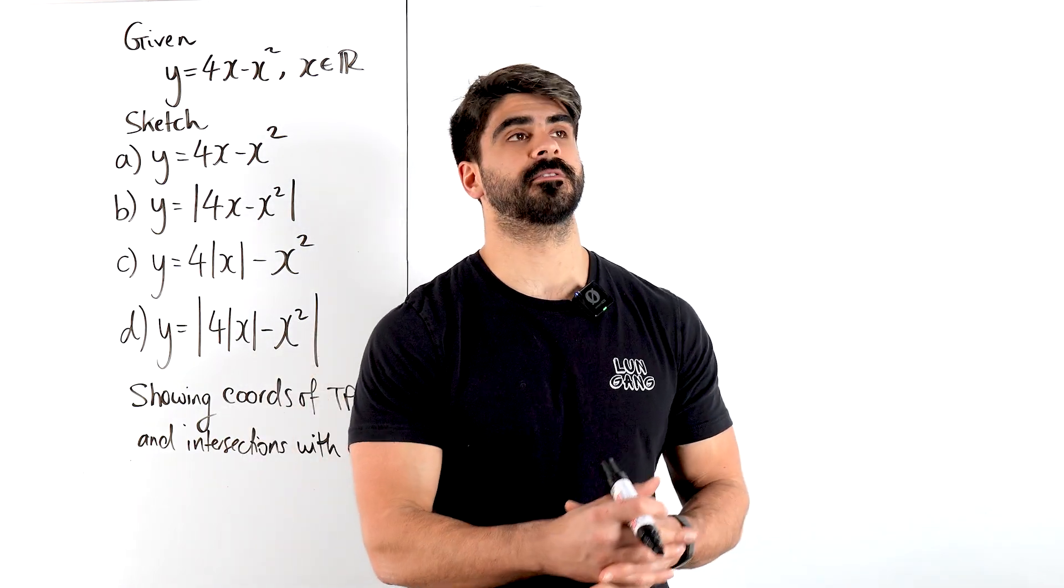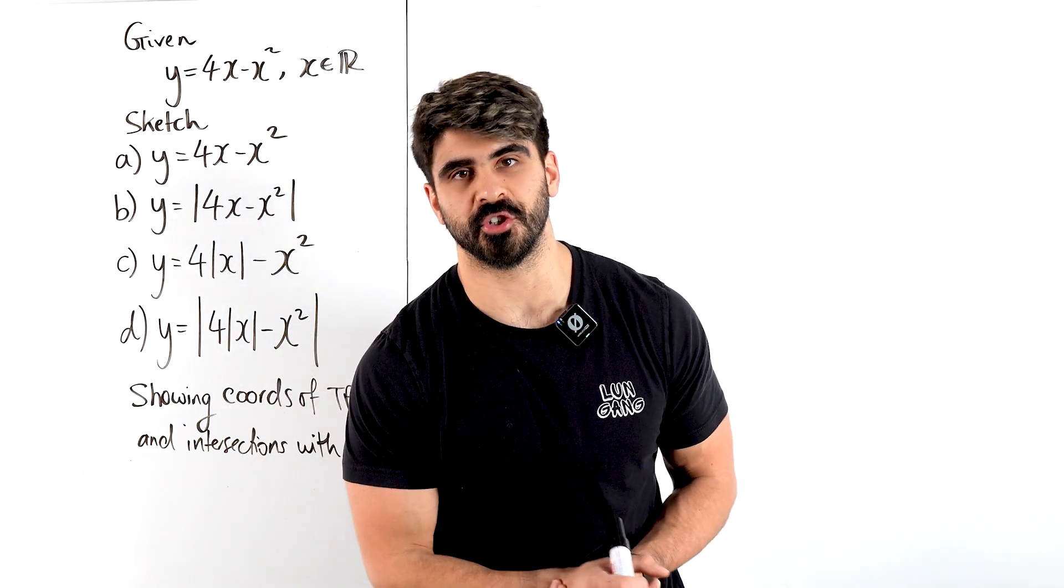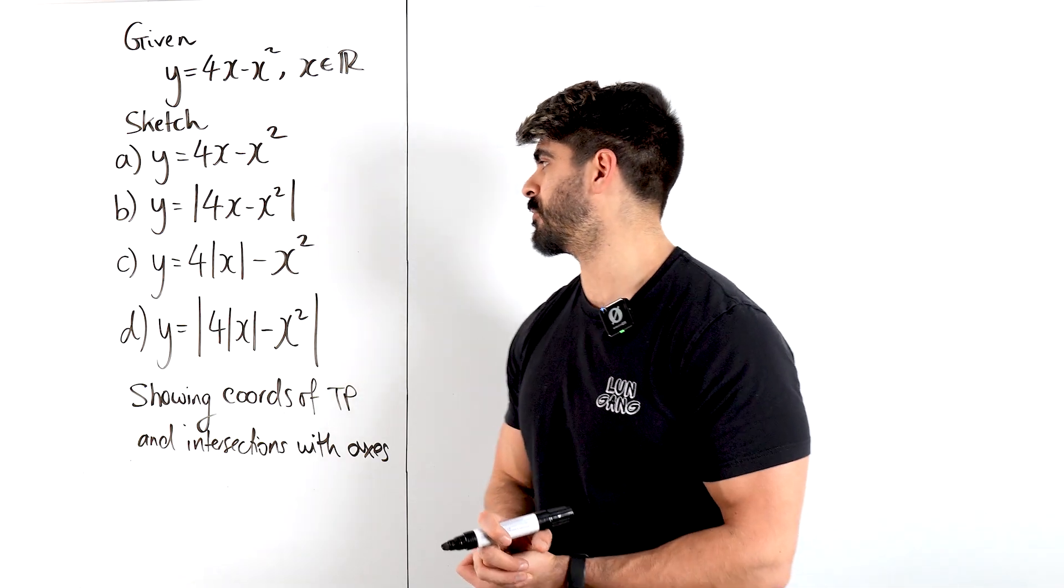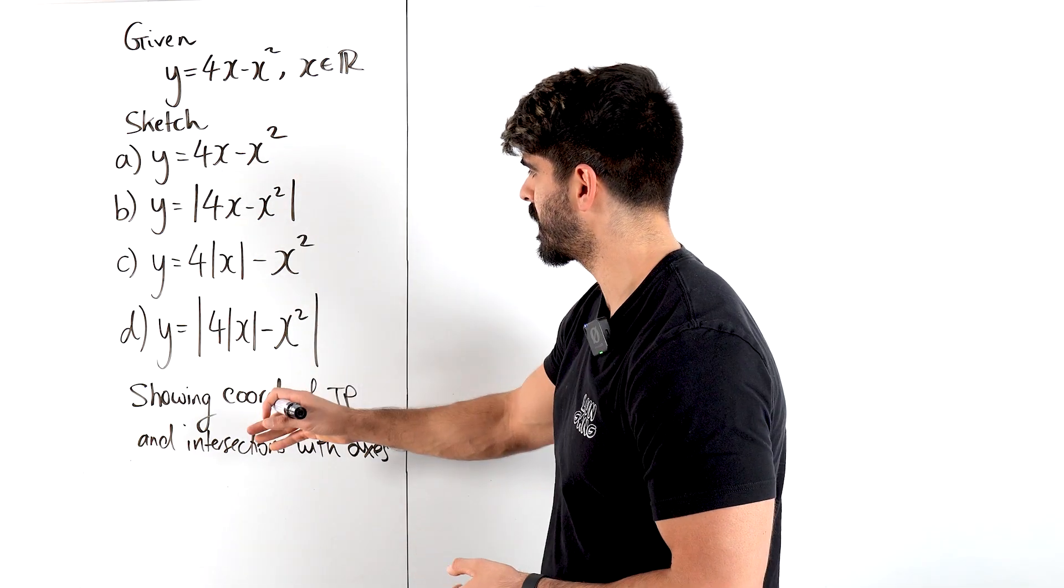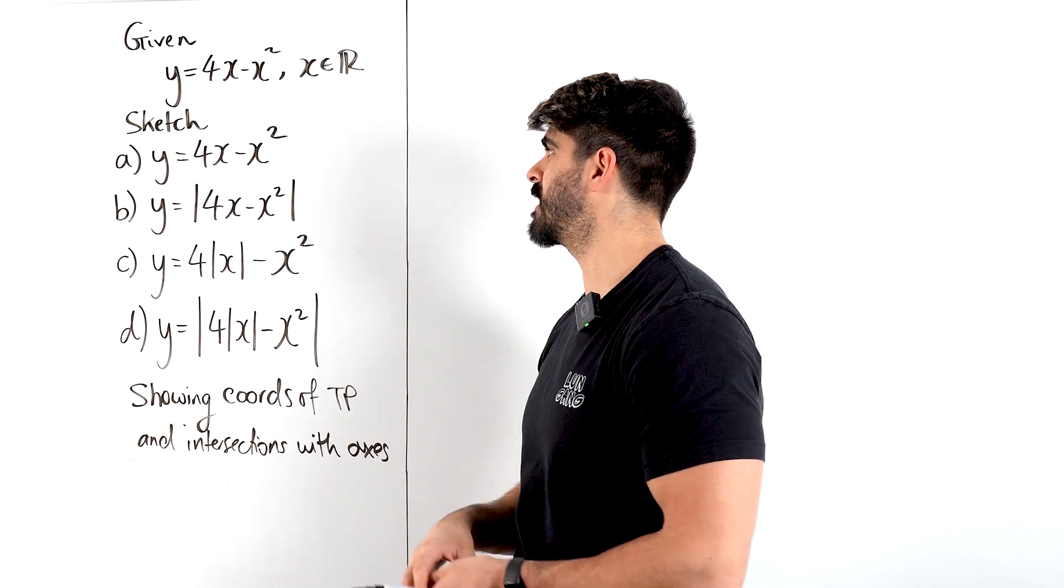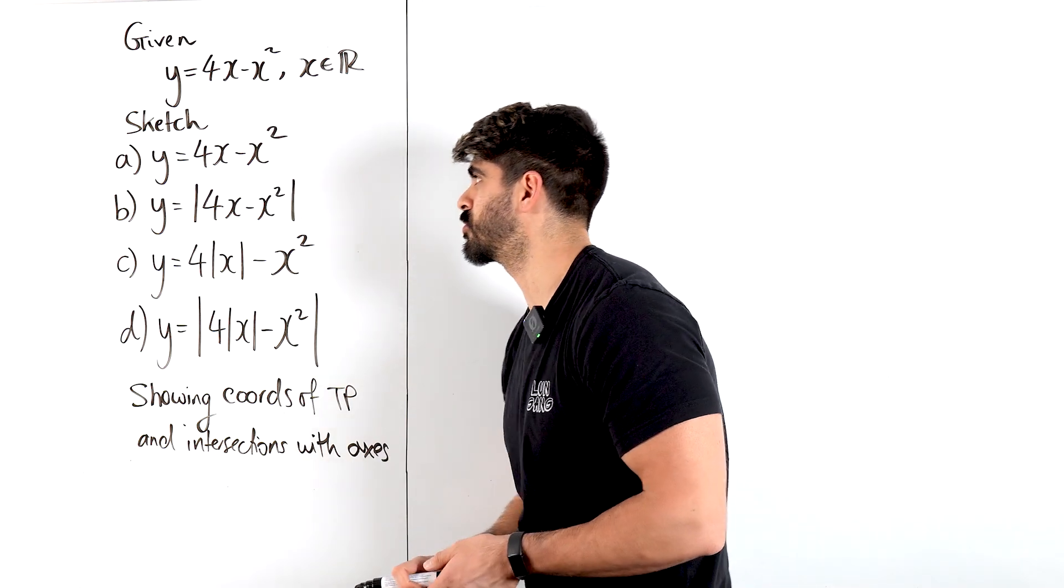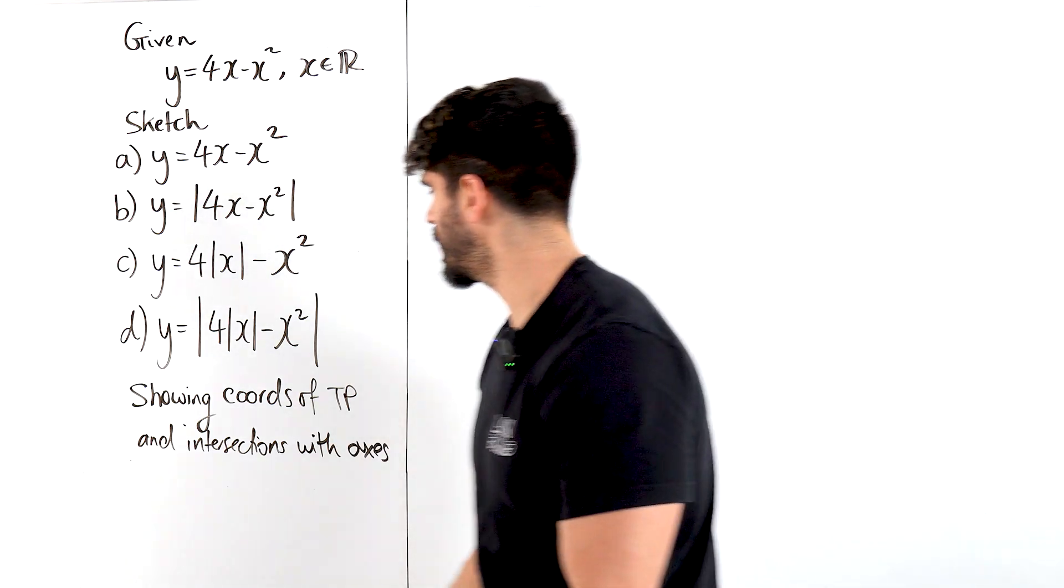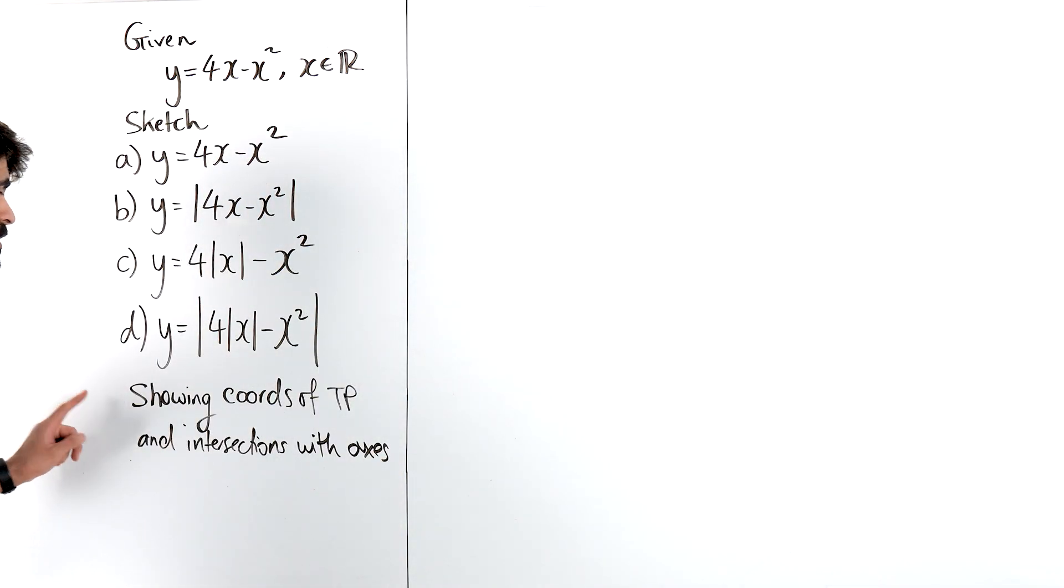Let's sketch all the modulus functions you need to know for your A-levels. I've got all the different types that they could possibly ask you, but first they've given us this quadratic and they just want us to sketch the quadratic. So to sketch any old quadratic, we also need to show the coordinates of the turning point and the intersection with the axes.